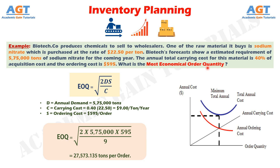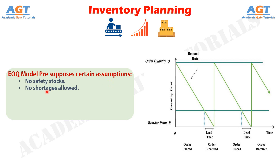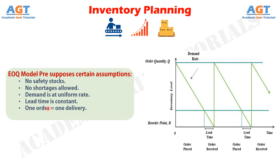This Economic Order Quantity model presupposes certain assumptions: there are no safety stocks available in inventory; no shortages are allowed in order delivery; demand is at a uniform rate and does not fluctuate; the lead time for order delivery is constant; and one order equals one delivery. This model also does not take into account other costs such as stock-out cost and acquisition cost in calculating EOQ.